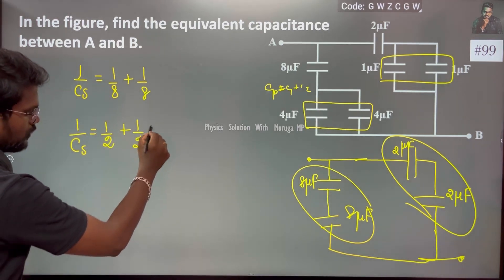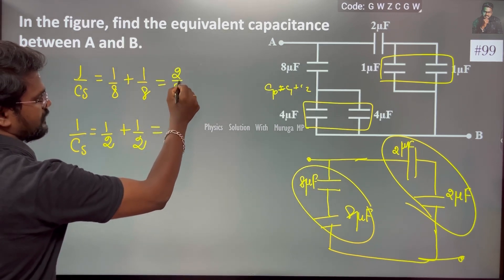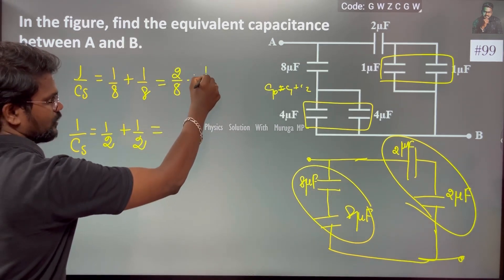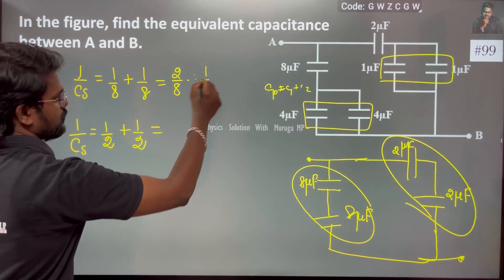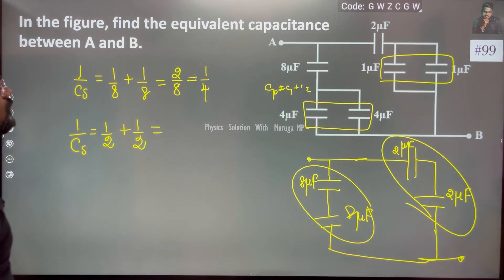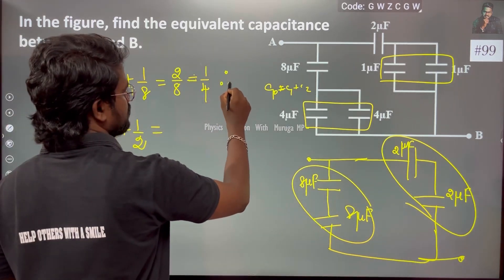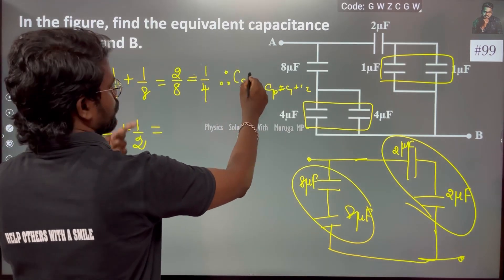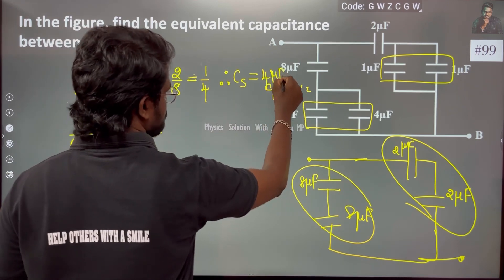For the series combination, 1 by Cs equals 1 by 4, therefore Cs is equal to 4 microfarad.